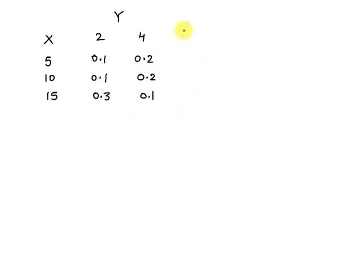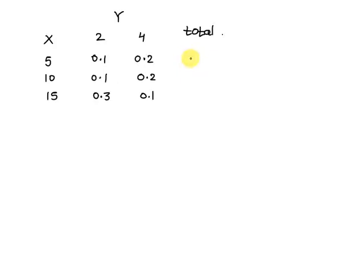First we will find the total probability. The total probability for X: 0.1 plus 0.2 is 0.3, then 0.1 plus 0.2 is again 0.3, and 0.3 plus 0.1 is 0.4. The total probabilities for the random variable Y: for y=2 it is 0.1 plus 0.1 plus 0.3, that is 0.5, and the other is also 0.5. The total is 1.0.